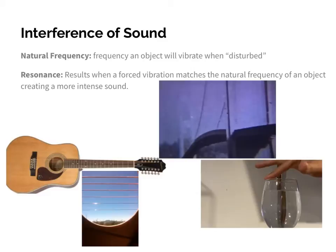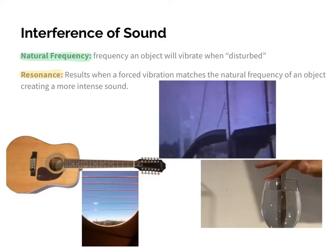A unique phenomenon that occurs when two sound waves interfere is what's called resonance. Resonance is really the foundation of musical instruments — it's an application of constructive and destructive interference. Resonance looks at another property of an object called its natural frequency. Any wave is created by a disturbance: if I drop a wrench or a PVC pipe and it hits the ground, that object will naturally vibrate at a specific frequency. That frequency is known as the natural frequency — all objects have one.